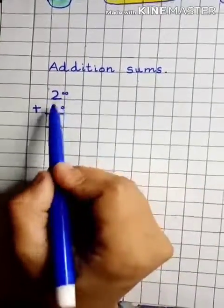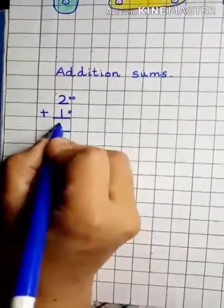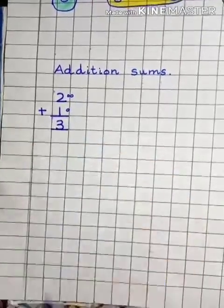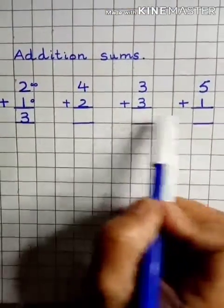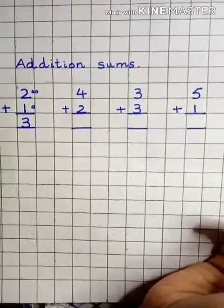You will count all together these balls. One, two, three. We get the answer three here. You have to write three here. I have given you these three sums. You have to do these sums on your rough register. Thank you.